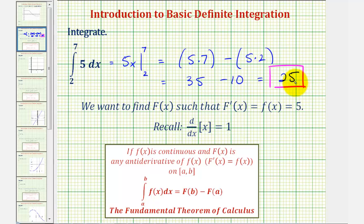There is one more thing I do want to mention. Notice how the function f of x equals five is always positive, and therefore this value represents the area under the function, and above the x-axis over the closed interval from two to seven.